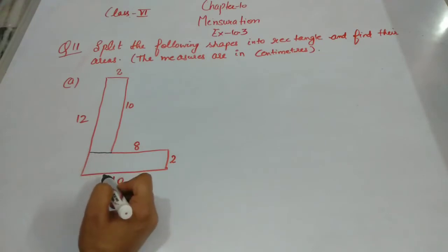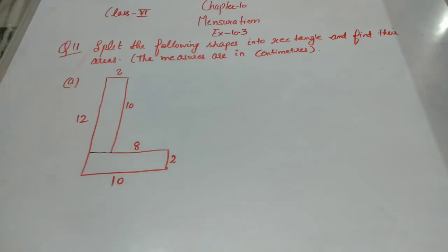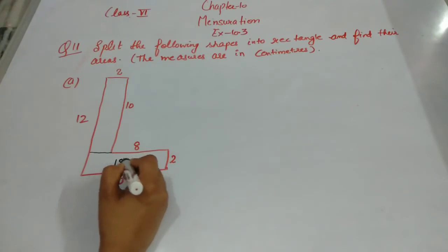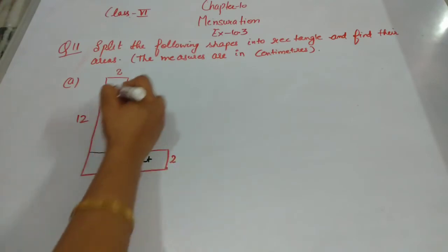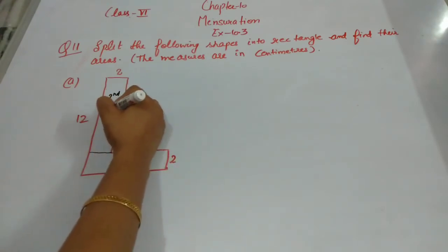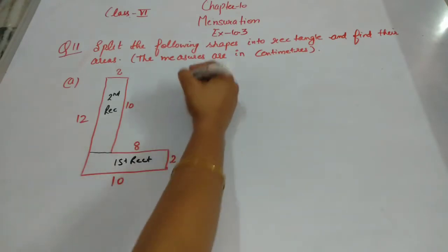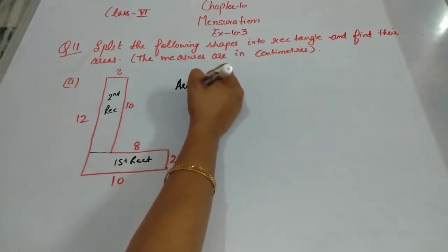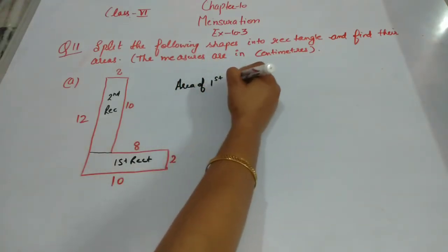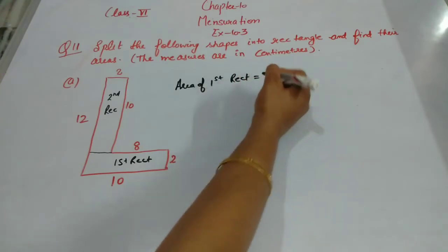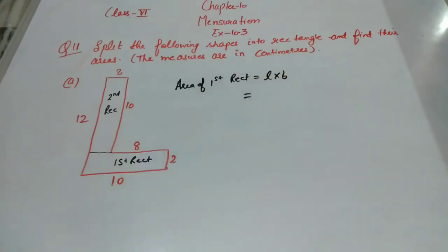You can join the shape in different ways — the answer will be the same. This is your first rectangle and this is your second rectangle. Now we will find the area. Area of first rectangle equals length into breadth. You have to see what the length and breadth are.